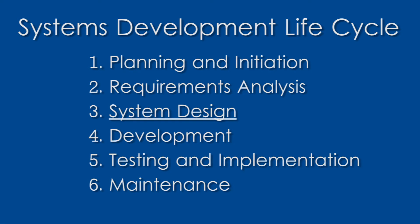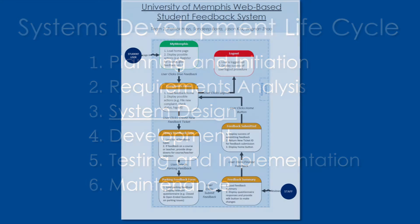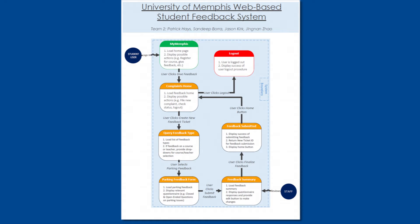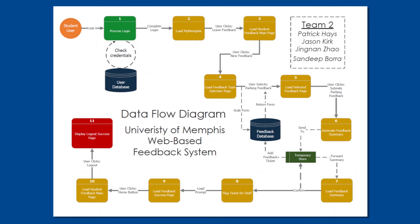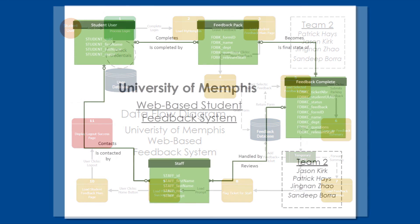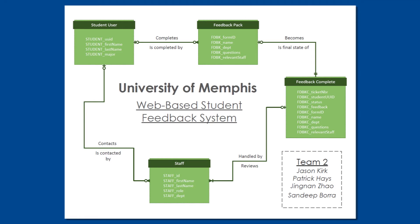To further develop the requirements determined in the planning and initiation stages, our group created a use case diagram which forms the foundation of our system. A dataflow diagram was then created to help us further visualize and plan the flow of information through our proposed system. This diagram details the inputs and outputs of the system and how information will be stored. An entity relationship diagram was then created to give us a top-down view of all entities, attributes, and relationships required in the proposed system.